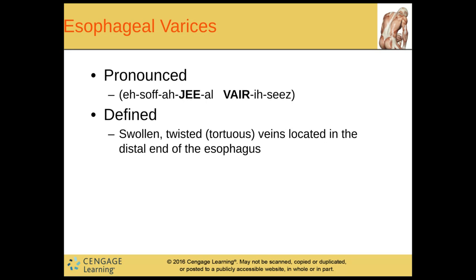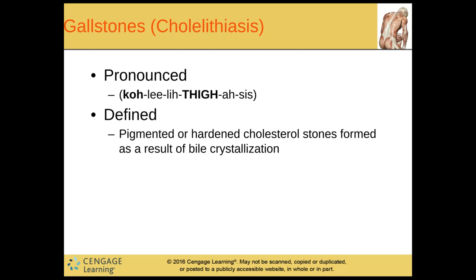And then we have esophageal varices. This is a swollen, twisted vein located in the distal end of the esophagus. Sometimes they can start to bleed and cause a gastric bleed — they're really pretty dangerous. And then we have gallstones, which is a pigmented or hardened cholesterol stone formed as a result of bile crystallization.